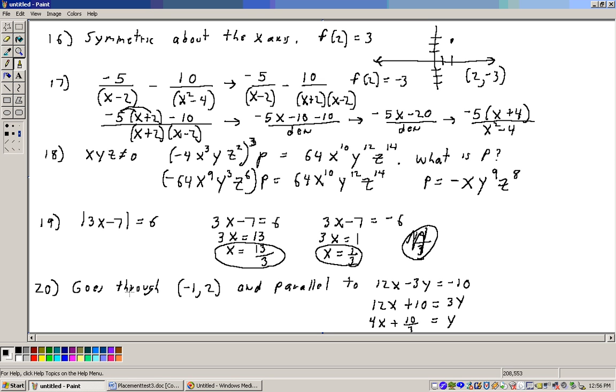Okay, the last one here says, get the equation of the line that goes through this point, negative 1, 2, and is parallel to the equation 12x minus 3y equals 10. Well, if it's parallel to it, it's going to have the same slope, so we need to get the slope of this line. To get the slope of this line, solve it for y.